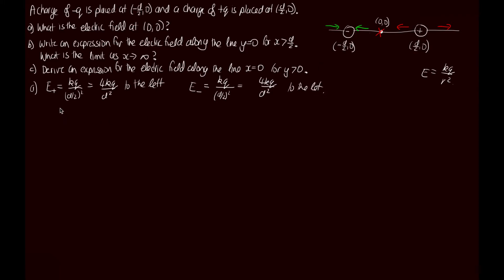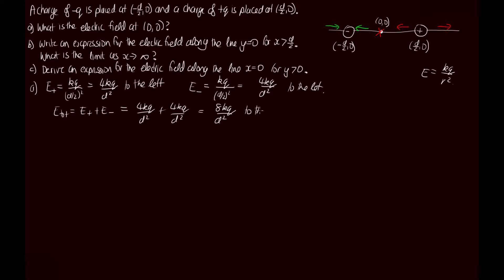To get the total electric field we sum these two. Because they're in the same direction, we simply add them: 4kq/d² + 4kq/d² = 8kq/d², directed to the left. That's part a.